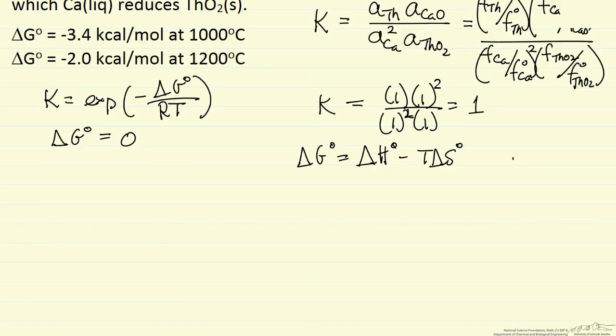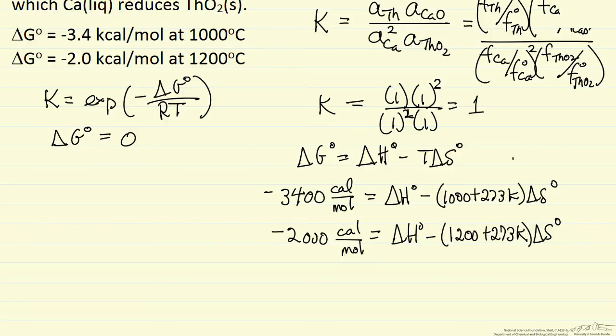We can substitute in for our two temperatures, our two values of Gibbs free energy. I made the substitution and written this in calories instead of kilocalories. I'm also assuming that delta H did not change with temperature - that's usually a pretty good assumption - and that delta S also has not changed significantly with temperature. Therefore I can take these two equations and solve for delta H and delta S to get a general expression for delta G as a function of temperature. If I just subtract the two equations, I can eliminate delta H.